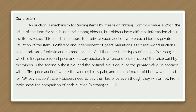An auction is a mechanism for trading items by means of bidding. In a common value auction, the value of the item for sale is identical among bidders but bidders have different information about the item's value. This stands in contrast to a private value auction, where each bidder's private valuation of the item is different and independent of peers' valuations. Most real-world auctions have a mixture of private and common values.